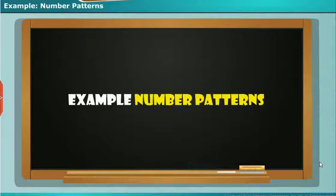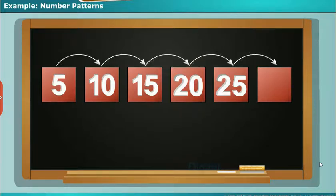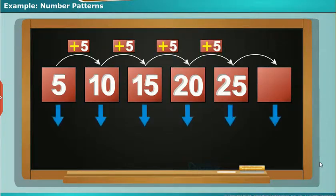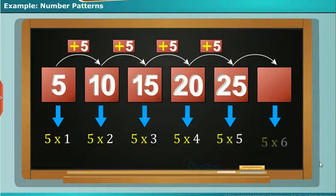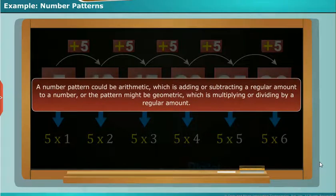Let us see some examples on number pattern. Look carefully at the given number series five, ten, fifteen, twenty, twenty-five. Here the series starts at five and add five each time. Five plus five is equal to ten. Ten plus five is equal to fifteen. Keep adding five each time. But the same number pattern follows another number rule. That is to multiply one, two, three and so on by five. So these series of numbers make a pattern and can be extended based on their rule like addition, subtraction, multiplication and division. A number pattern could be arithmetic which is adding or subtracting a regular amount to a number, or the pattern might be geometric which is multiplying or dividing by a regular amount.